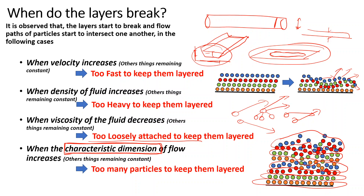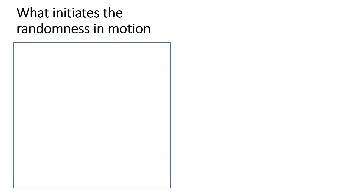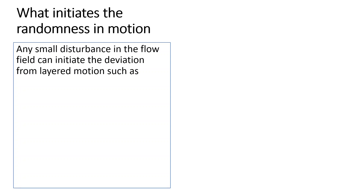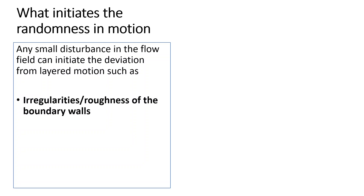As these quantities increase or decrease, the fluid starts to behave in a random or turbulent way. What causes or initiates this randomness? We can say that any small disturbance in the flow field can start a deviation from the layered flow — it can break or bend the layers.